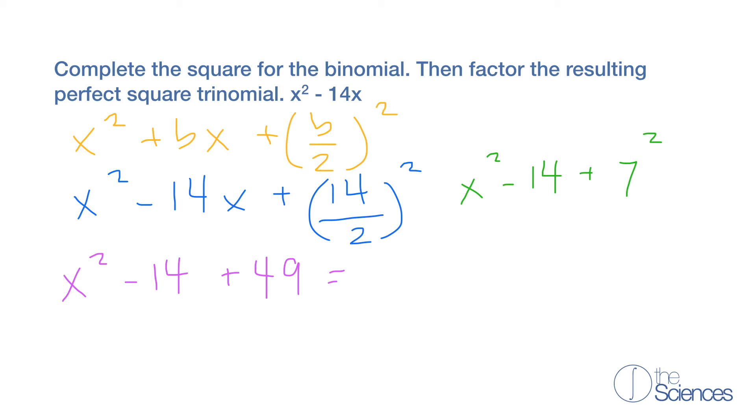This can be factored using the perfect square into x minus, because we have a minus here, and the square root of 49 is 7. So x minus 7 squared is our answer.